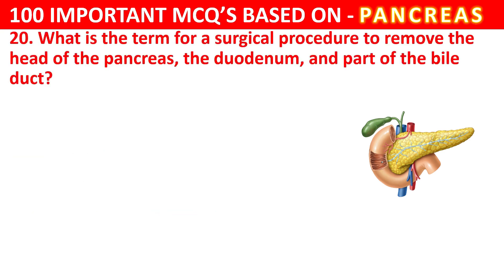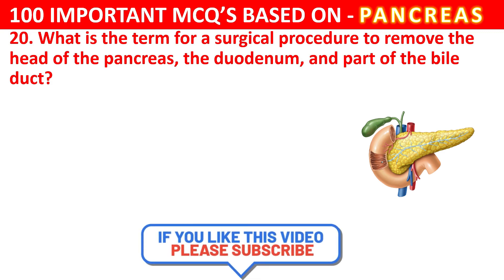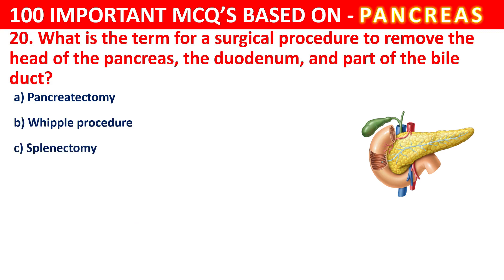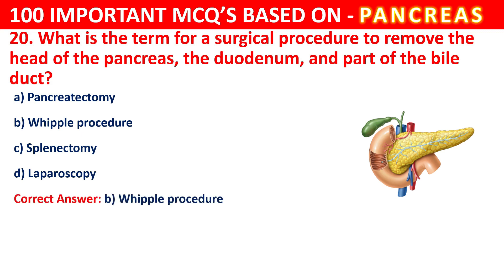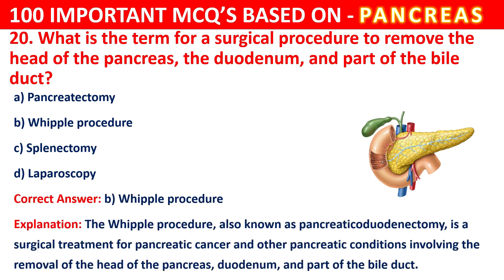Question 20. What is the term for a surgical procedure to remove the head of the pancreas, the duodenum, and part of the bile duct? Options are Pancreatectomy, Whipple procedure, Splenectomy, or Laparoscopy. The correct answer is B, that is Whipple procedure. The Whipple procedure, also known as Pancreaticoduodenectomy, is a surgical treatment for pancreatic cancer and other pancreatic conditions involving removal of the head of the pancreas, the duodenum, and part of the bile duct.